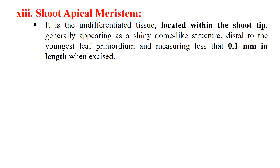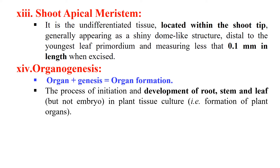The next term is shoot apical meristem. It is a part of the shoot tip, generally located within the shoot tip, and it is the part used for making virus-free plants. The next term is organogenesis — organ plus genesis, meaning the formation of organs. In plant tissue culture we generally form organs from the explant, such as roots, shoots, and leaves, so this process is known as organogenesis.